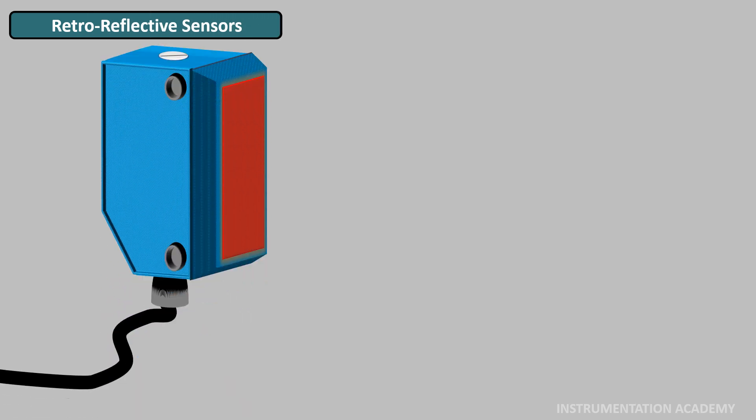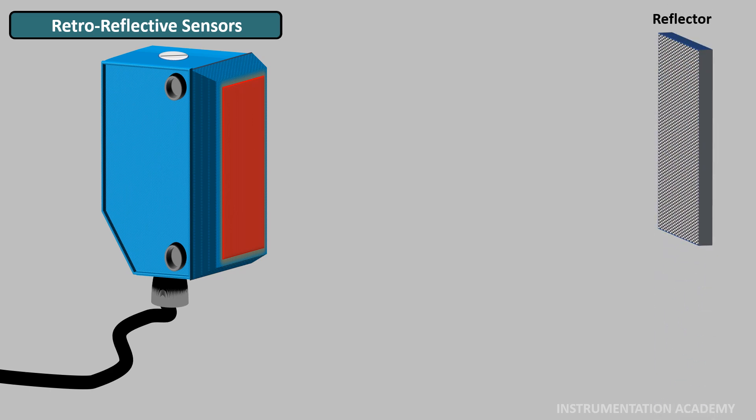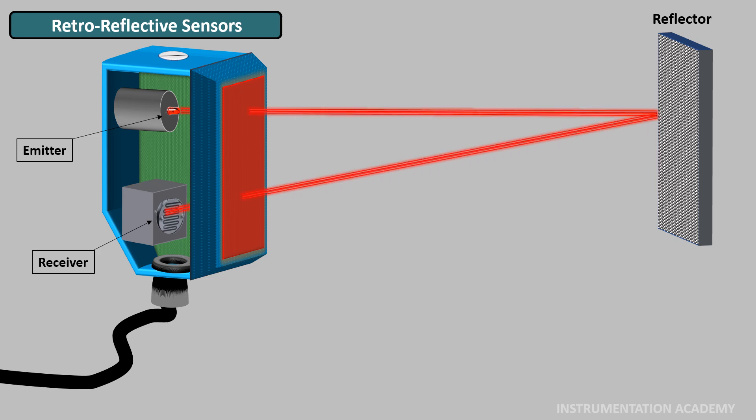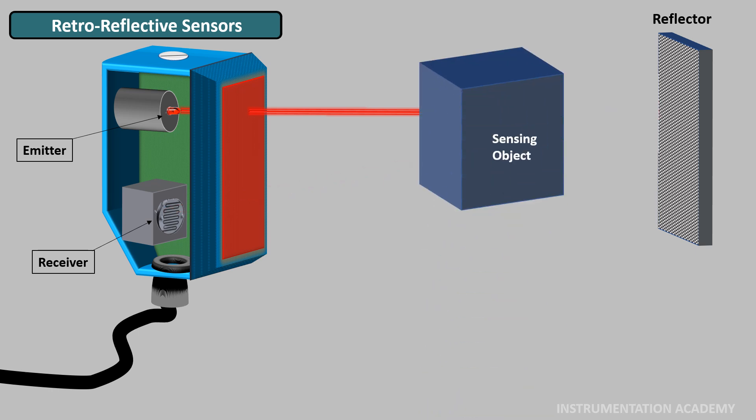Retro reflective sensors are photoelectric sensors with a reflector. The photoelectric retro reflective sensing mode is also called the reflex mode or simply the retro mode. The emitter and receiver are installed in the same housing and light from the emitter is normally reflected back to the receiver by a reflector installed on the opposite side. When the sensing object interrupts the light, it reduces the amount of light received at the receiver. This reduction in light intensity is used to detect the object.